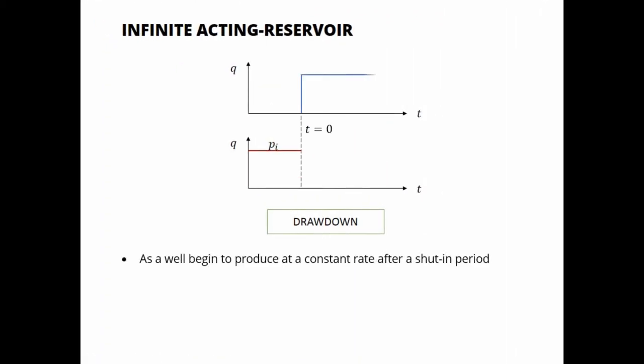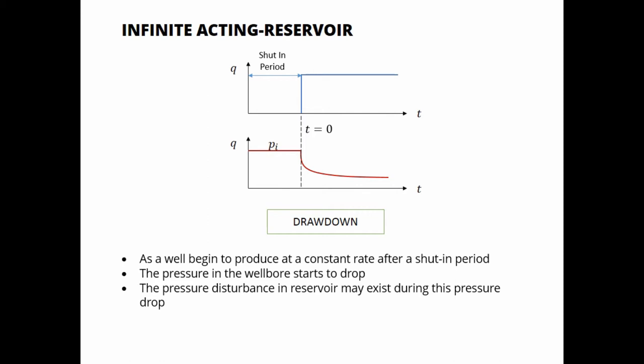As a well begins to produce at a constant rate after a shut-in period, the pressure in the wellbore starts to drop. The pressure disturbance in reservoir may exist during this pressure drop.